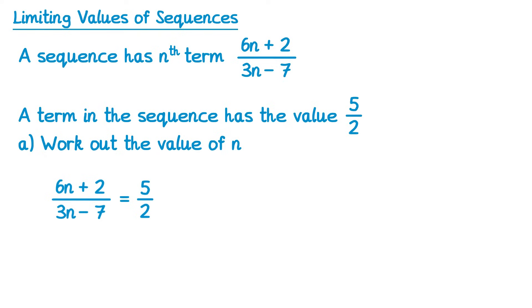To do this, I would cross multiply, so multiply the left side by 2 and the right side by 3n minus 7, so you'll get 2 lots of 6n plus 2 equals 5 lots of 3n minus 7. If you expand these brackets, 2 times 6n is 12n and 2 times 2 is plus 4, 5 times 3n is 15n and 5 times negative 7 is negative 35. Now if we subtract 12n from both sides, we'll get 4 on the left, on the right it would be 3n take 35, add 35 to both sides and you'll get 39 equals 3n, and then divide both sides by 3 and you'll get n equals 13.